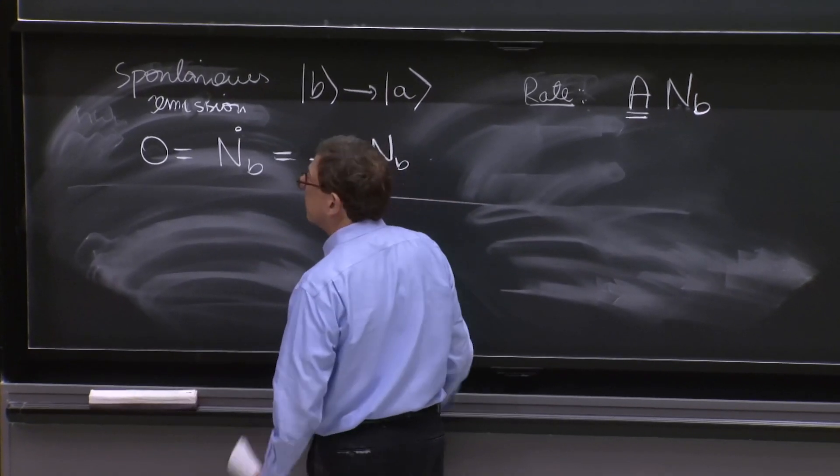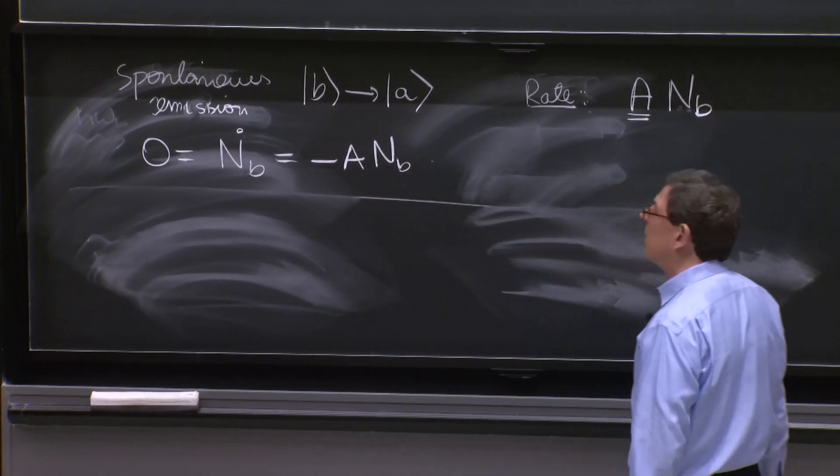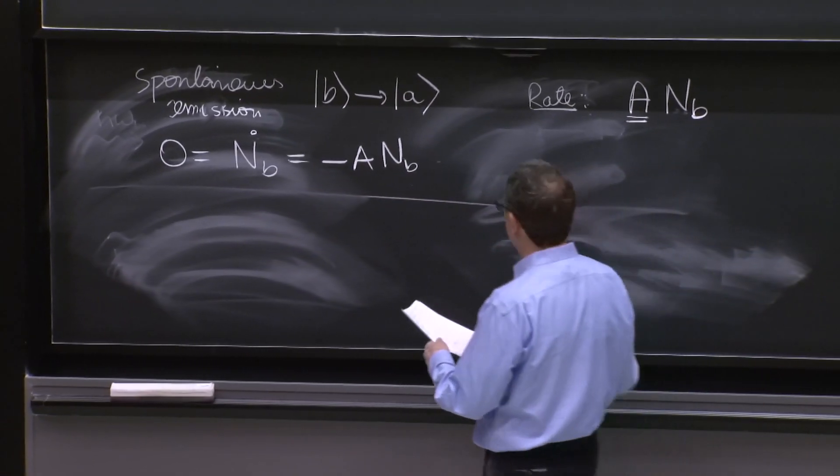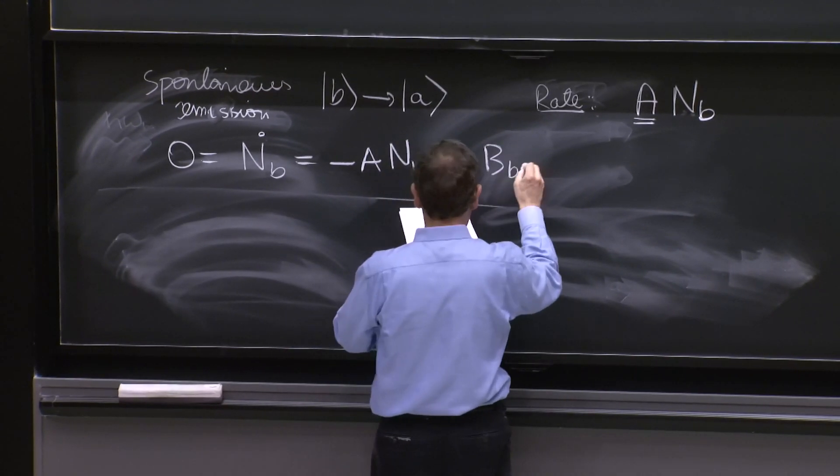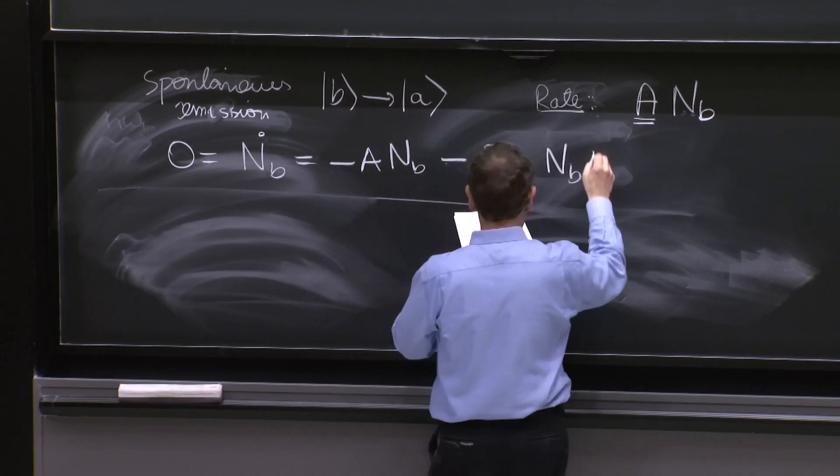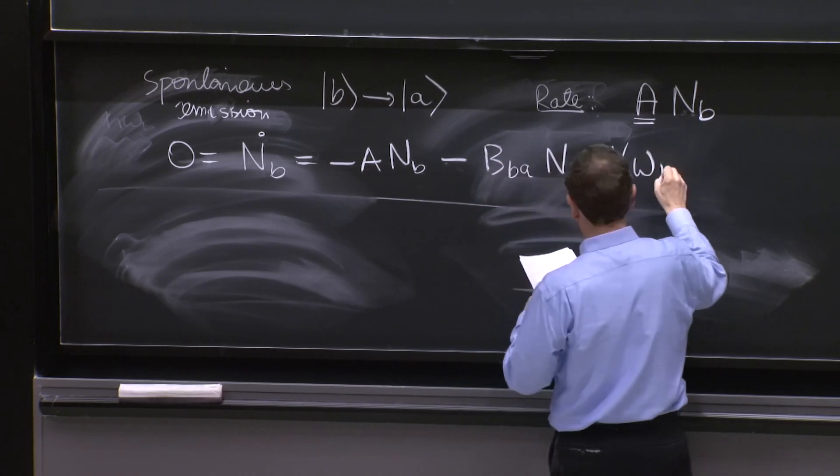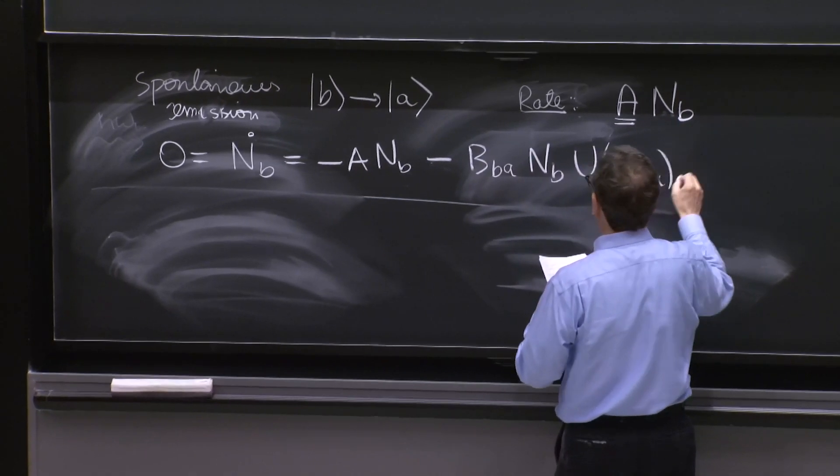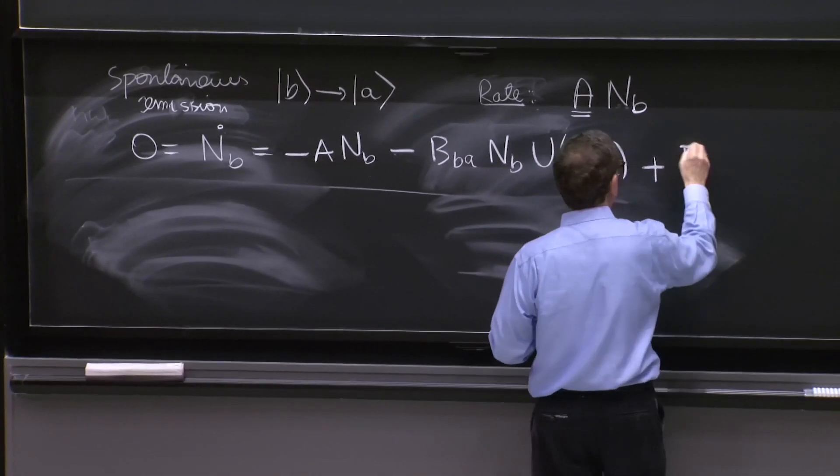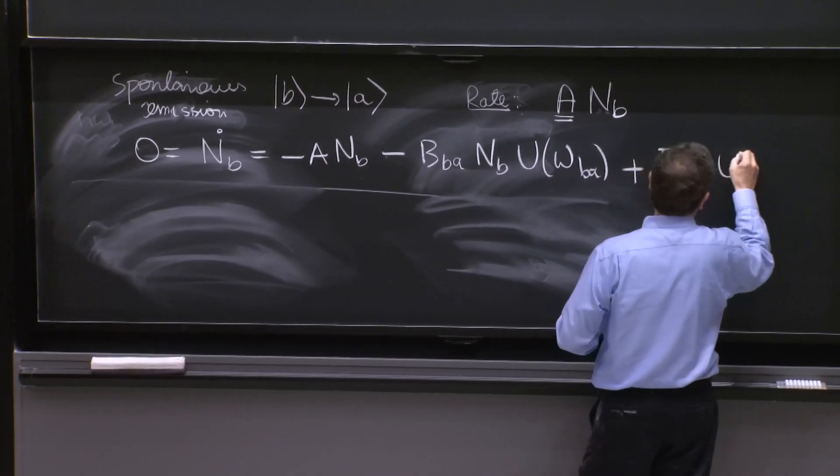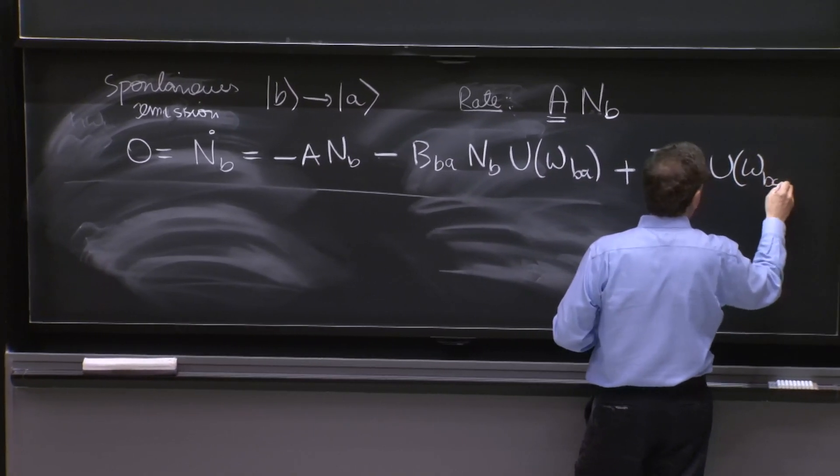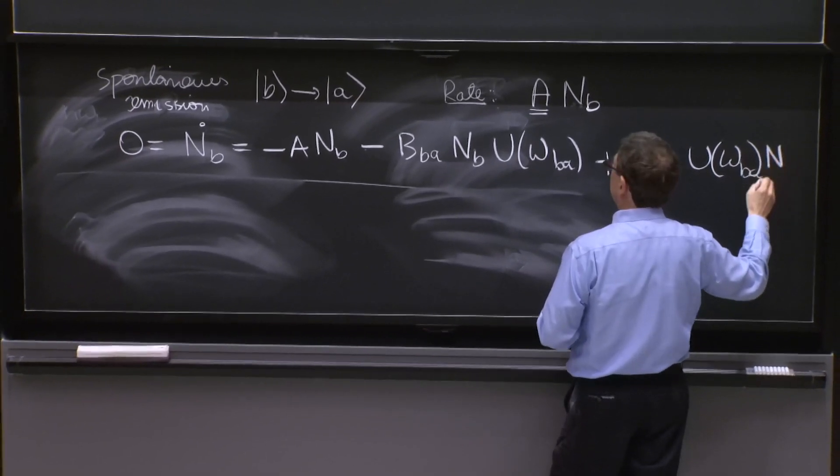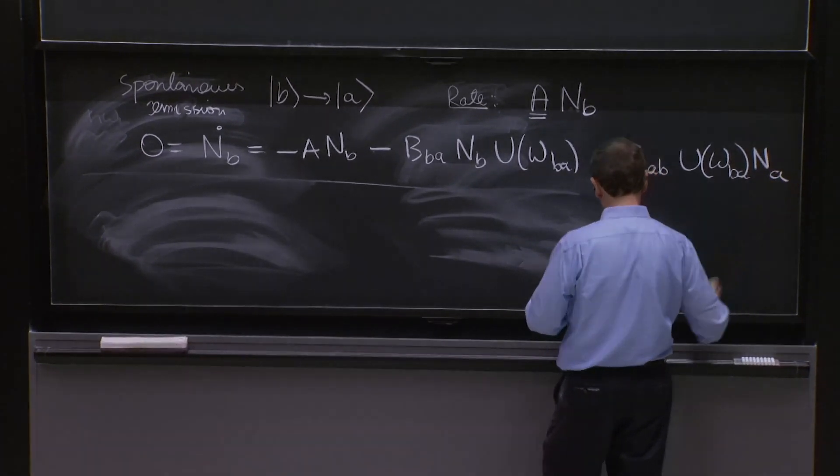NB, that's the spontaneous emission. We'll write this first, and then we'll write the other two. BBA NB U ωBA minus plus BAB U of ωBA NA.